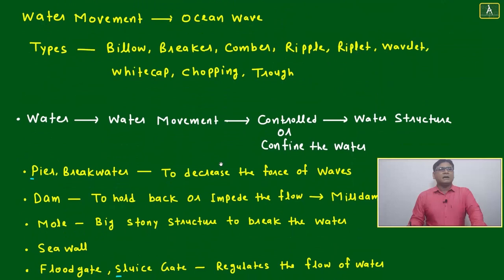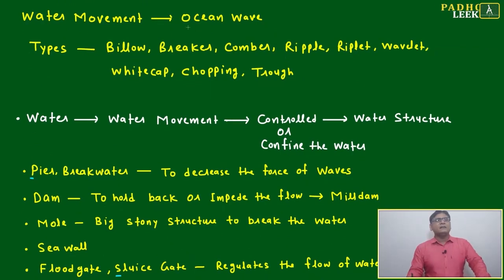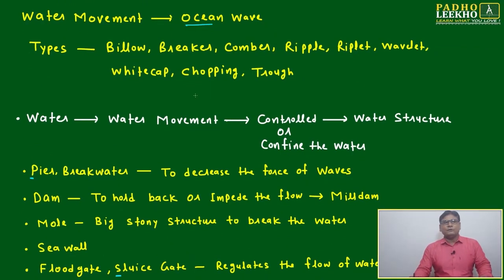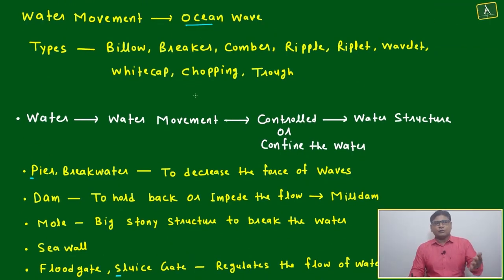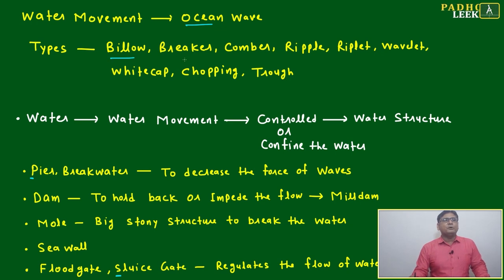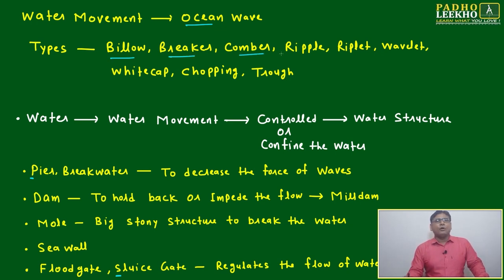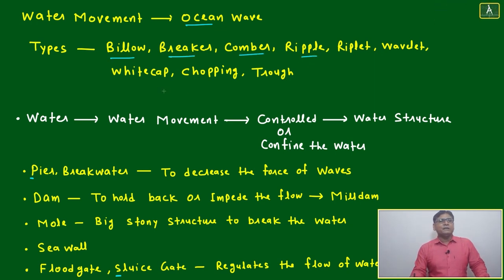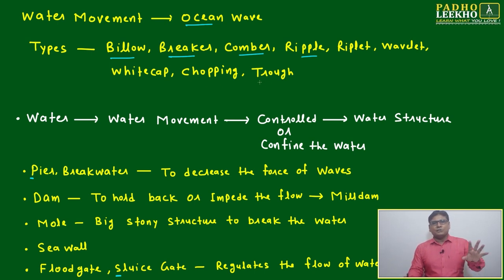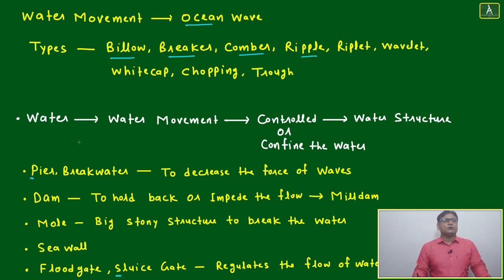Water movement — another case is ocean waves, which are also a kind of water movement. Types include breaks, comber, ripple, wavelet, and choppy top. These are common terminologies related to water movement.